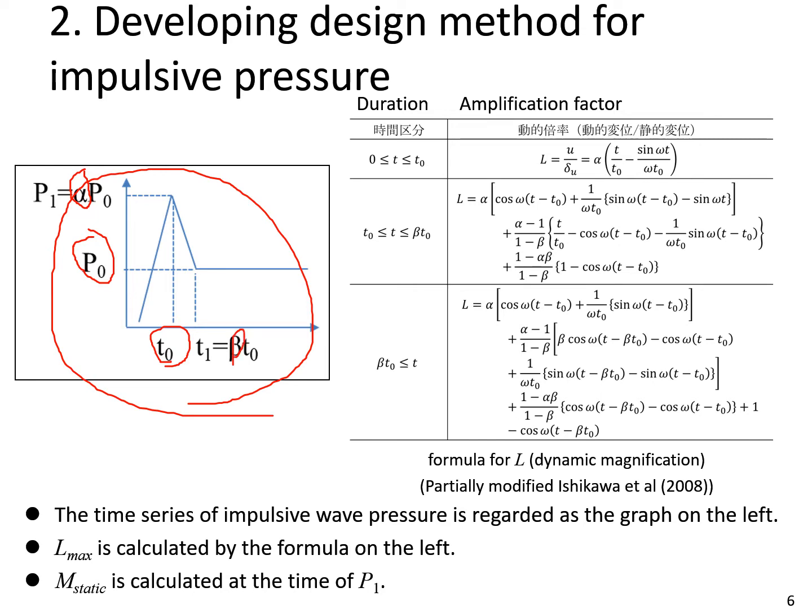The P0, alpha, T0, and beta are substituted to the formula on the right. Then we can calculate dynamic magnification L. M static is calculated at the time of T1. By this method, we can evaluate simply without dynamic analysis.